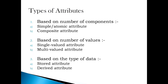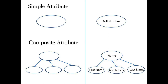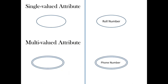The types of Attributes based on different properties are shown on the screen. Simple Attributes are those which cannot be divided further, whereas Composite Attributes can be divided further into two or more simple Attributes. Single Valued Attributes can have only one value at an instance of time, whereas Multi-Valued Attributes can have more than one value at an instance of time. The symbols and examples for both have been shown.